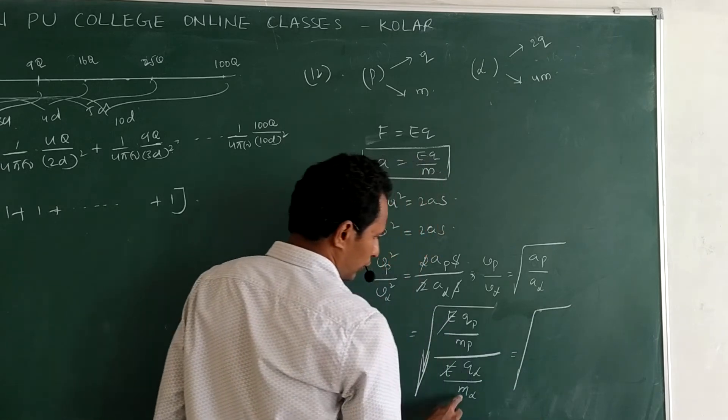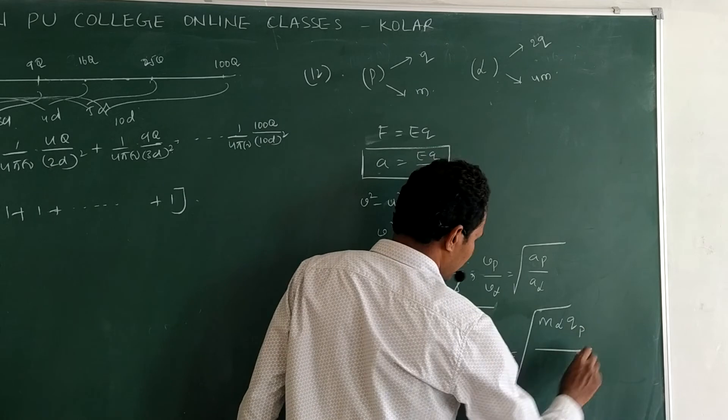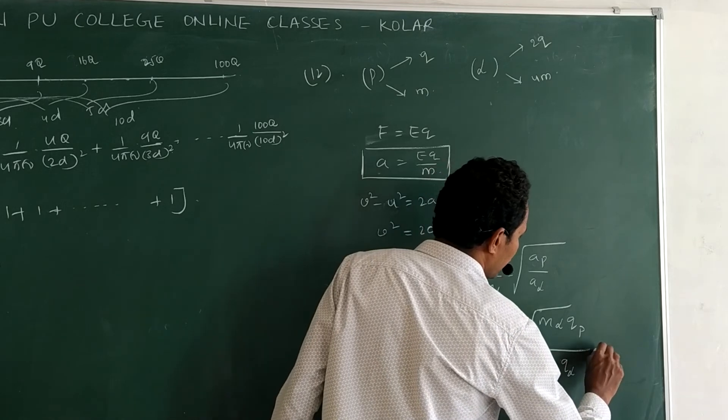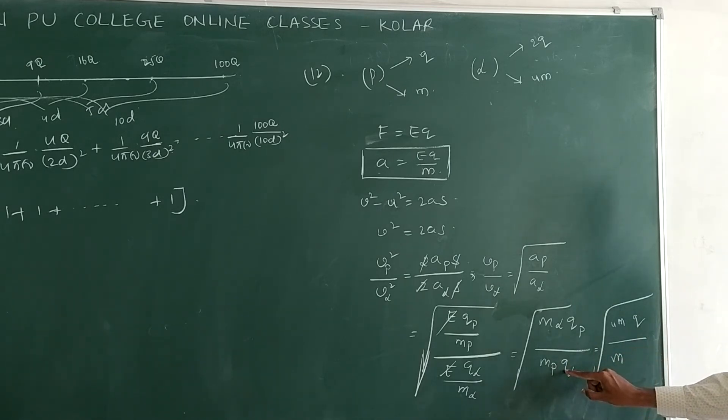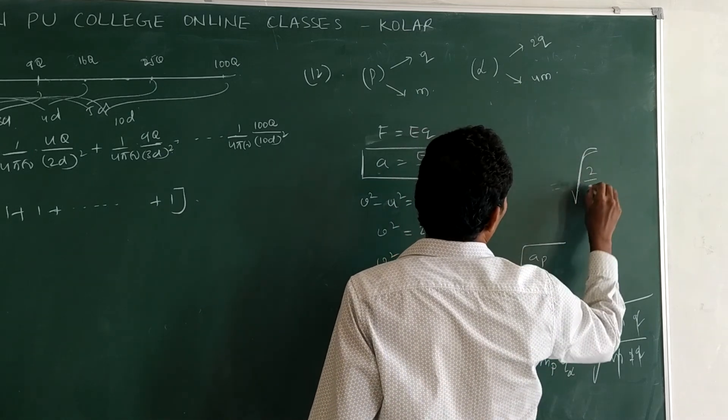By mass of proton, charge of alpha. Now substitute the values. Mass of the alpha quantity 4M, charge of the proton Q, by mass of the proton M, charge of the alpha 2Q. M, M cancel, Q, 2 cancel, 2 once, 2 times.